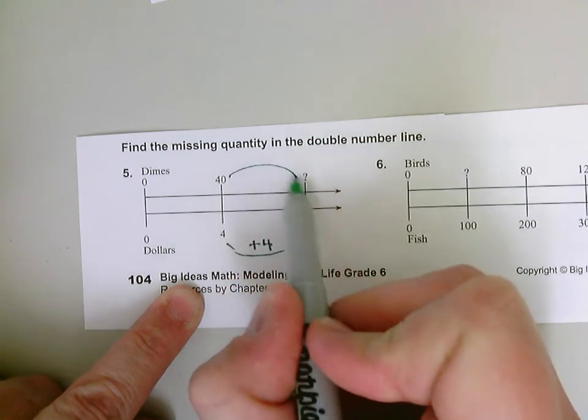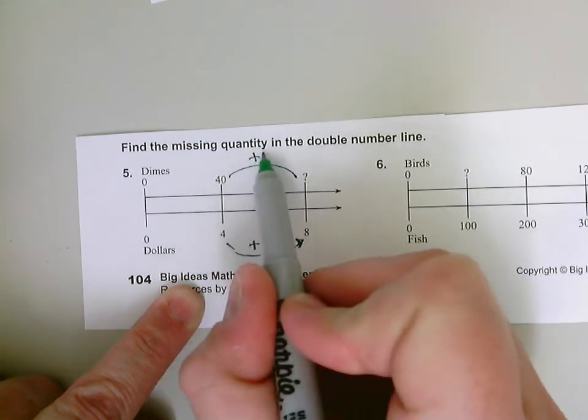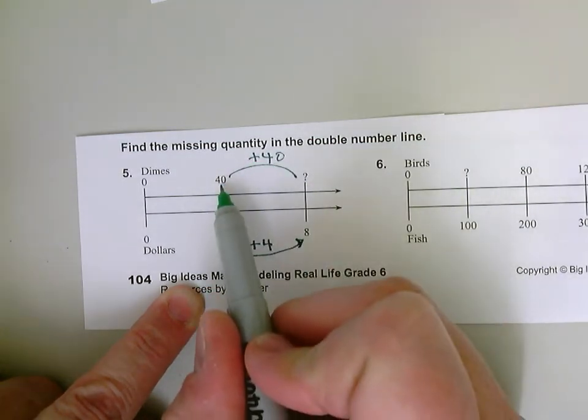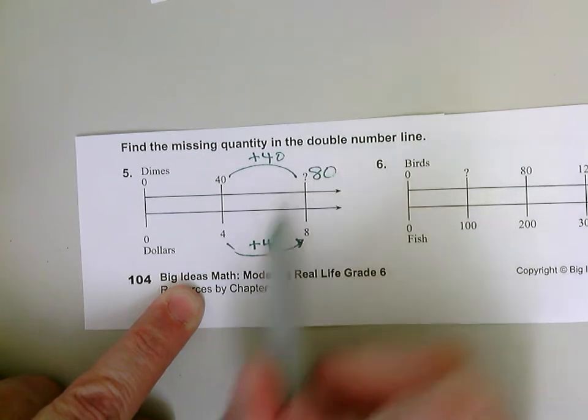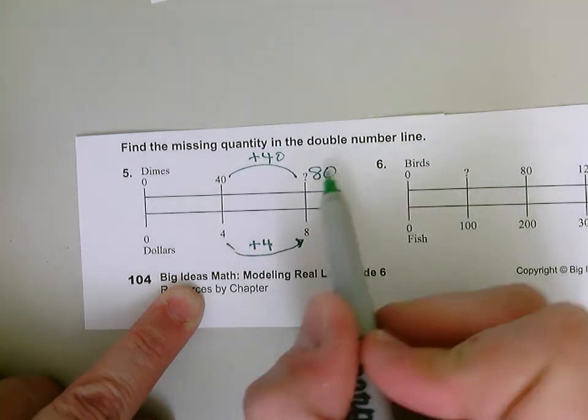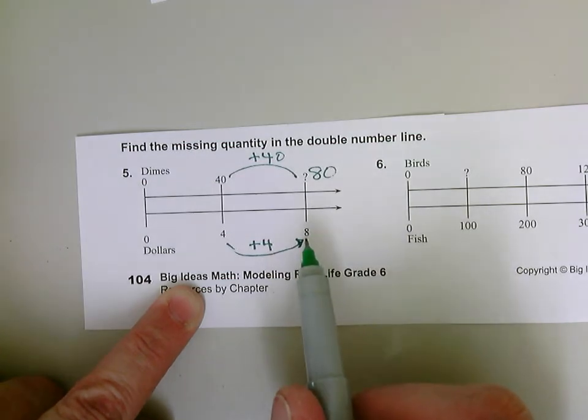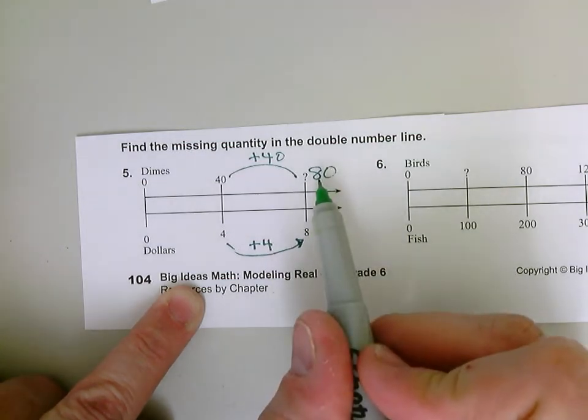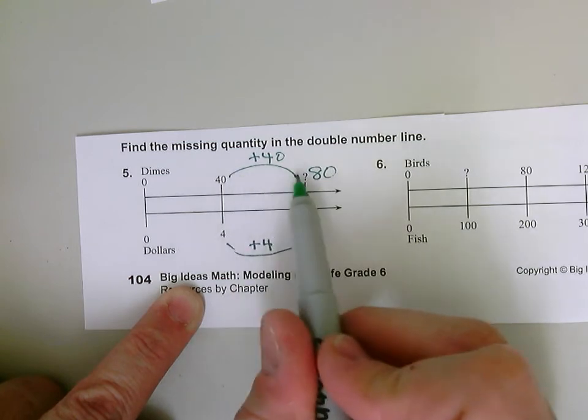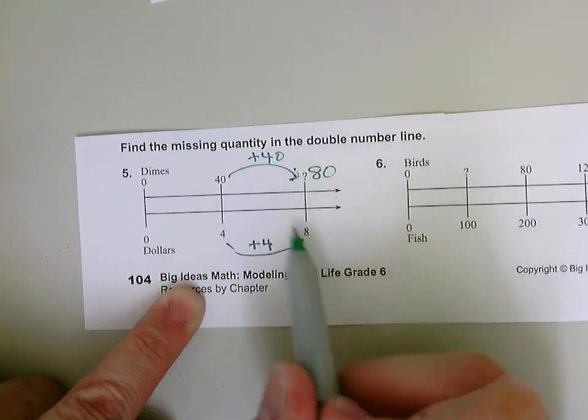So 40 plus 40 is 80. Four plus four is eight. So 80 dimes equals eight dollars. So eight dollars is the same as 80 dimes. Okay, so we're adding that same amount. We're adding that same quantity that we had.